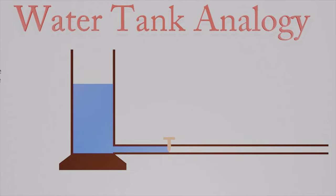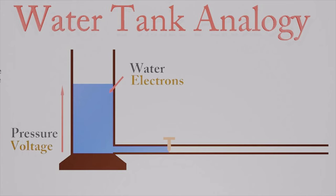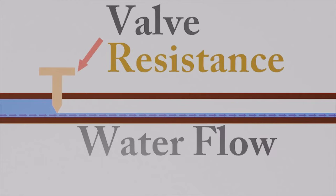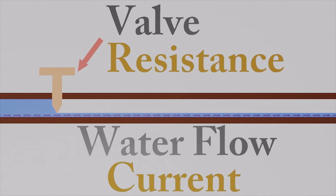When describing these terms, a common analogy is a water tank. In the water tank analogy, water represents the charges, water pressure represents the voltage, and the control valve represents the resistance. Let's open the valve a little bit — water starts to flow. According to our analogy, this moving water represents the moving electrons. Moving electron flow is named as electric current.